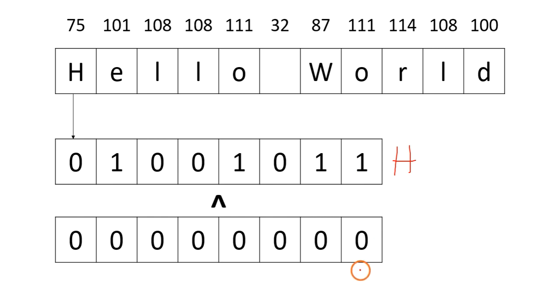When bits are different (1 and 0), we get 1. When bits are the same (0 and 0), we get 0. Working through each bit position: 1 and 0 gives 1, 0 and 0 gives 0, and so on.